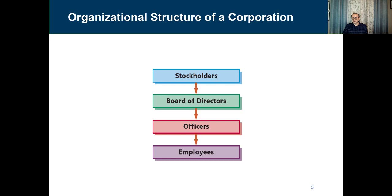This slide gives us a good presentation of the relationships between the different organizational parties. We have the stockholders, who are the owners of the company. They elect the board of directors, which sets policy and provides oversight for managers. The board of directors hires the officers or senior executives, who manage the day-to-day transactions and decisions. The officers then hire employees, who implement what the officers want to perform for the business.